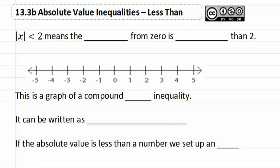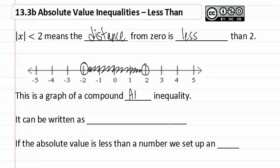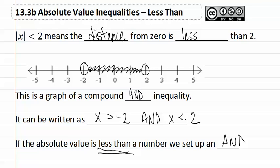13.3b Absolute Value Inequalities Less Than. If you have the absolute value that's less than two, this means that the distance from zero is less than two, which means it is somewhere between negative two and positive two. This is a graph of a compound inequality. It can be written as x is greater than negative two and x is less than two. If the absolute value is a less than, then we set up an and inequality.